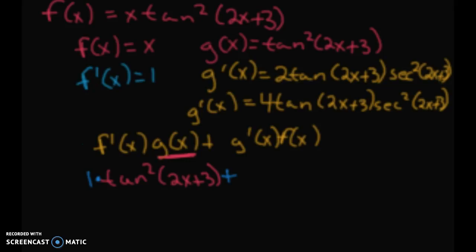Now we need to take the derivative of this part, which is what I have up here, that's g'(x). sec²(2x+3) times the original x. So I'll put it right here. Technically you can factor out...